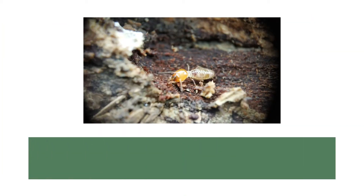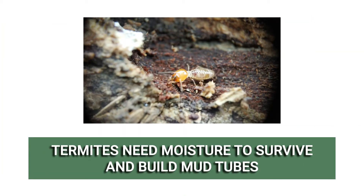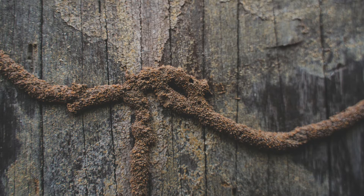Termites are drawn to moist locations, especially around wood. Some termite species, like Formosan termites, create mud tubes leading from the soil to the tree trunk, branches, or adjacent sites. These tubes provide a safe way for termites to travel from place to place.